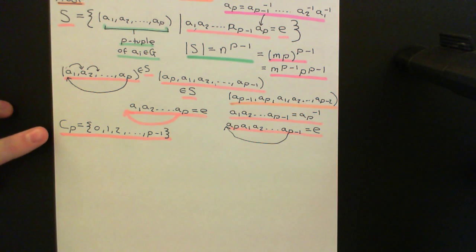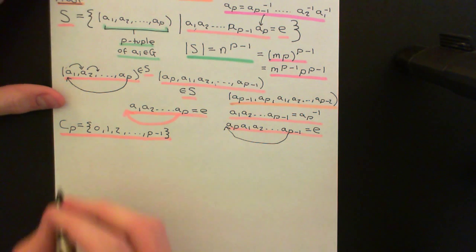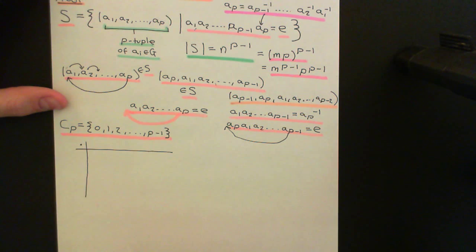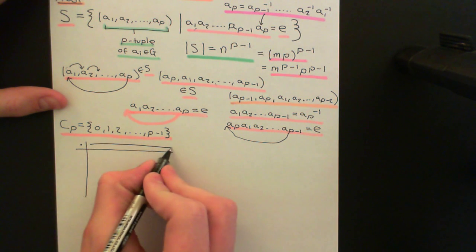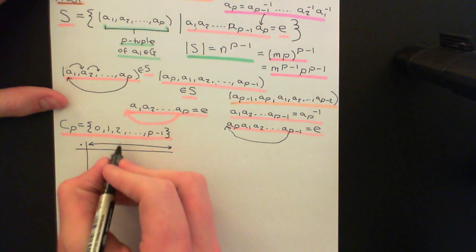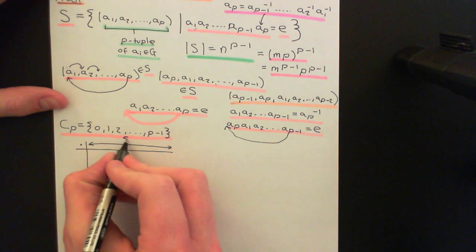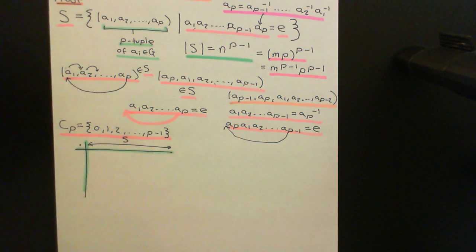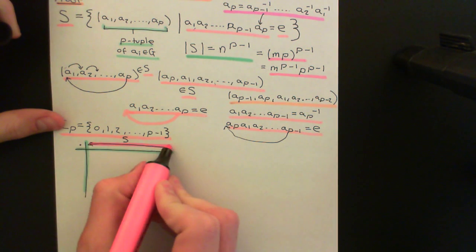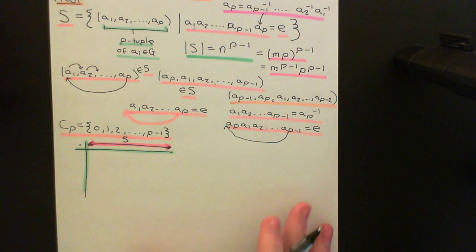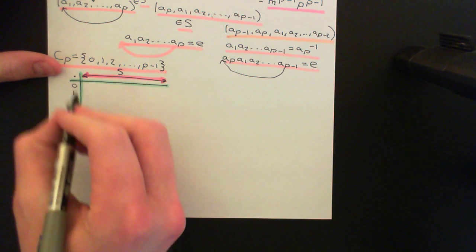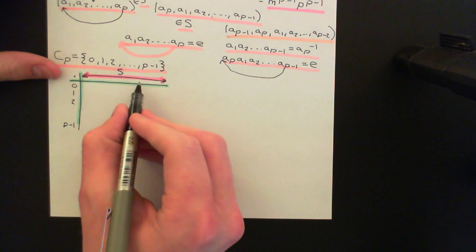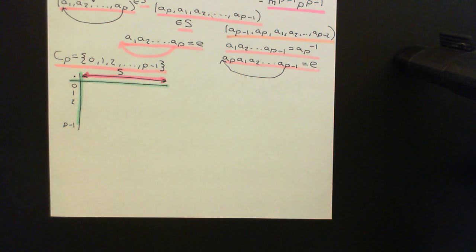What we're now going to consider is a group action by this group on the set capital S. We'll produce a group action composition table, calling the group action dot as normal. Every element of the set — every great big P-tuple of elements of the group — gets a column in this composition table, so all of S goes along the top. Then we put all the elements of the cyclic group down the side: 0, 1, 2, all the way down to P-1.